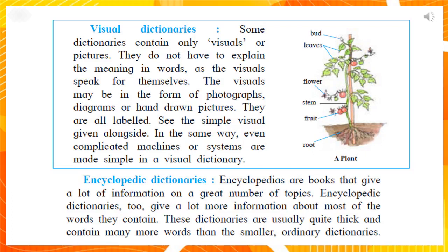Encyclopedic Dictionaries: Encyclopedic means Vishwakosh, or world knowledge. Encyclopedias are books that give a lot of information on a great number of topics. Encyclopedic dictionaries give a lot more information about most of the words they contain. These dictionaries are usually quite thick and contain more words than the smaller, ordinary dictionary.